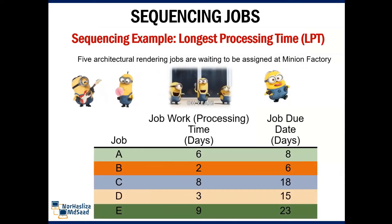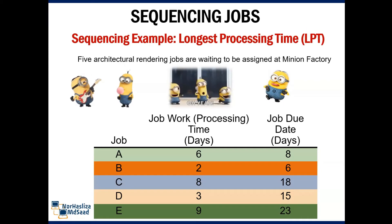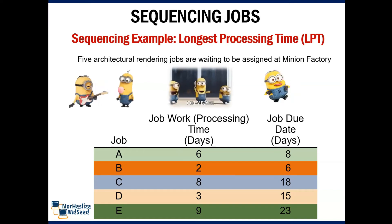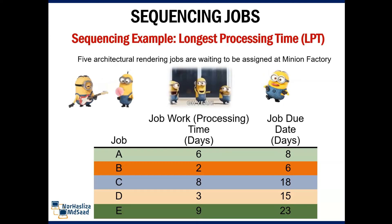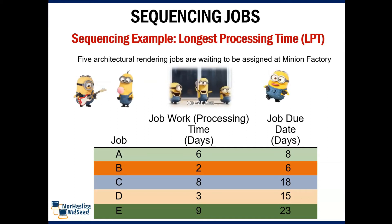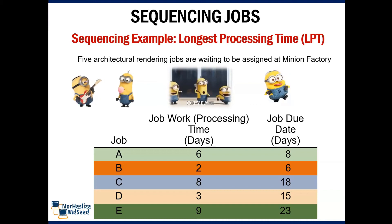In this example, I will show you how to use sequencing jobs for Longest Processing Time. Five architectural rendering jobs are waiting to be assigned at Minion Factory. Their work processing times and due dates are given in the following table. The firm wants to determine the sequence of processing according to longest processing time.